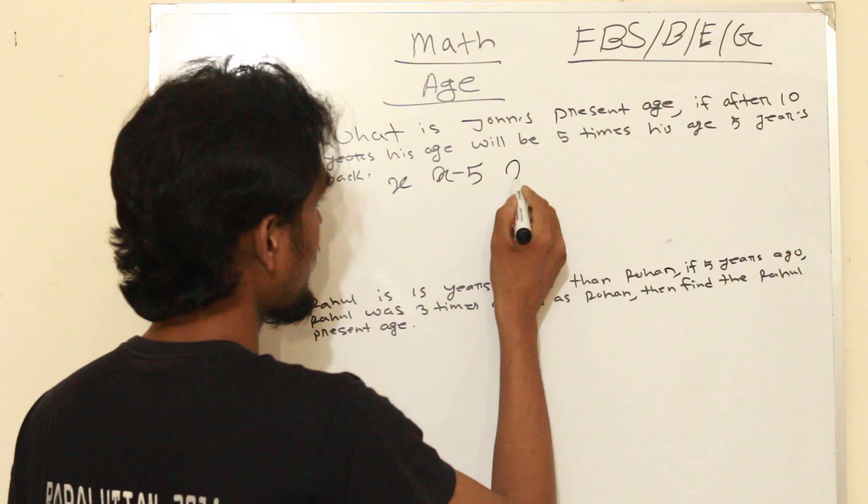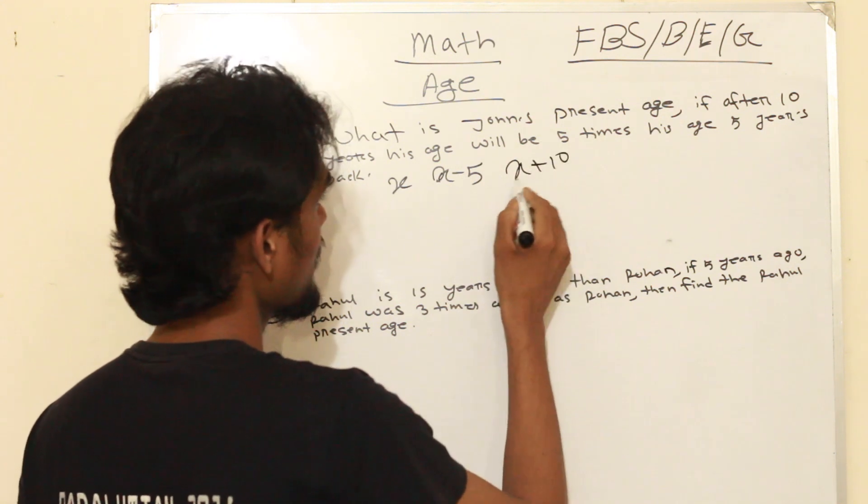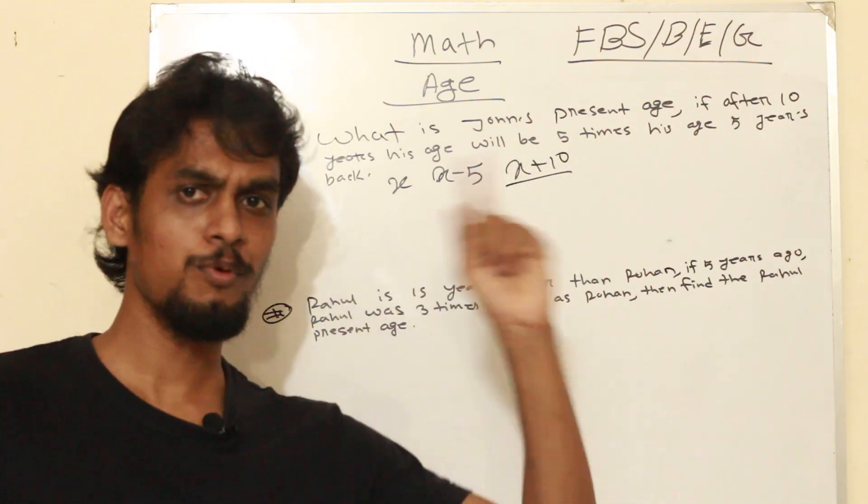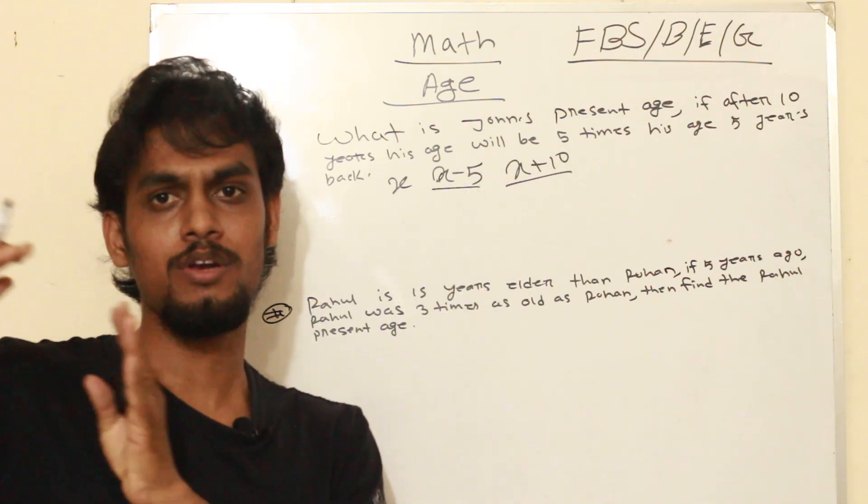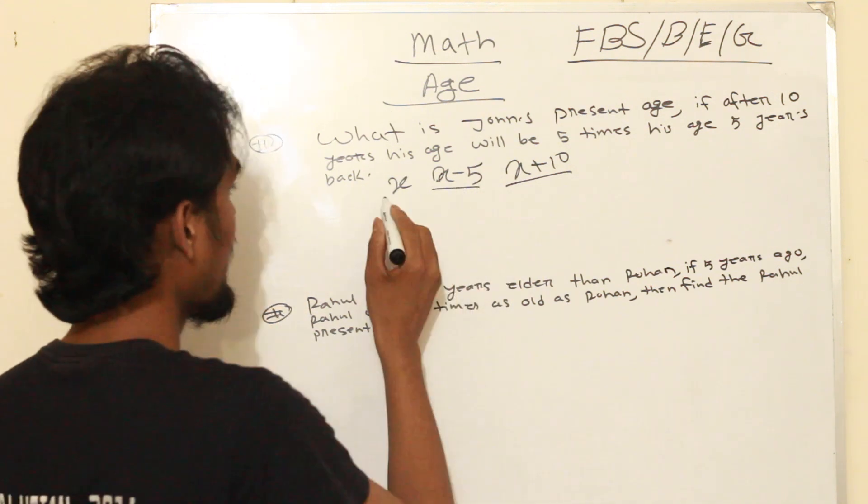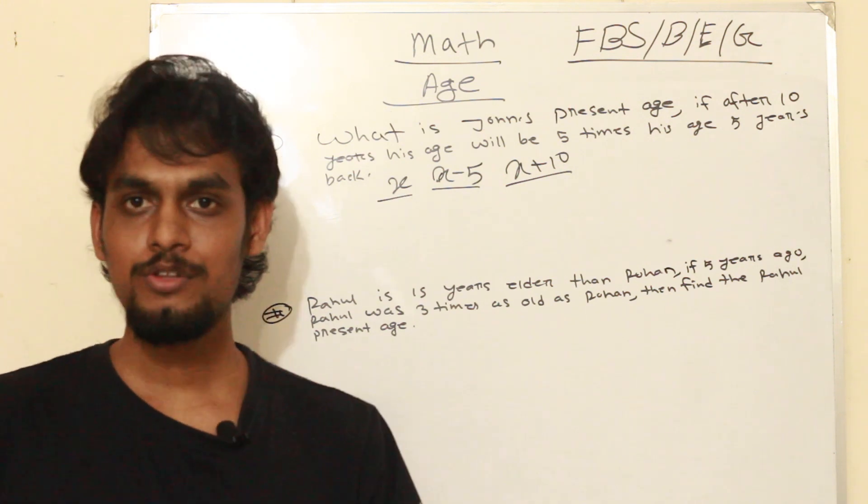Then 5 years ago his age was x minus 5, and 10 years later his age will be x plus 10. This means 10 years later his age will be 5 times what it was 5 years ago, and x is his present age.